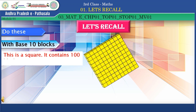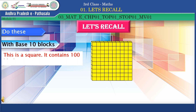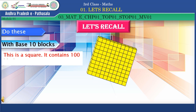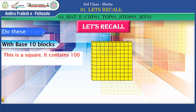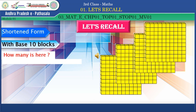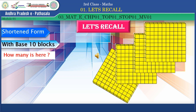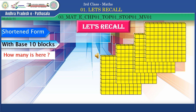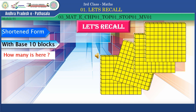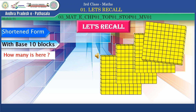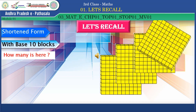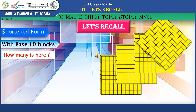This is a square. It contains one hundred blocks. How many squares are here? Just count. Four squares are there, so four hundreds.